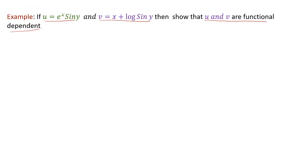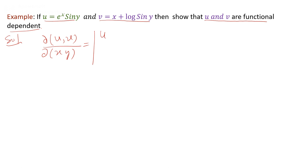To check whether these two functions are functionally dependent or independent, we find the Jacobian of (u, v) with respect to (x, y). That is the determinant of: partial derivative of u with respect to x, partial derivative of u with respect to y, partial derivative of v with respect to x, and partial derivative of v with respect to y.